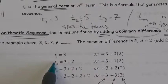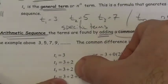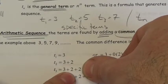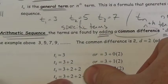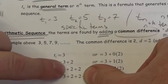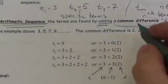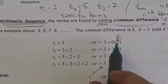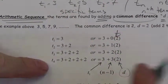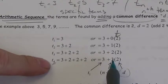To get my second term T₂, I start with my first term and add two. To get my third term, I take my second term and add two — it's like taking the first term and adding two twos. To get the fourth term, I take the third term and add two — I'm adding three twos. We use the letter D to refer to that common difference. Notice that the number of D's added is always one less than the term number.